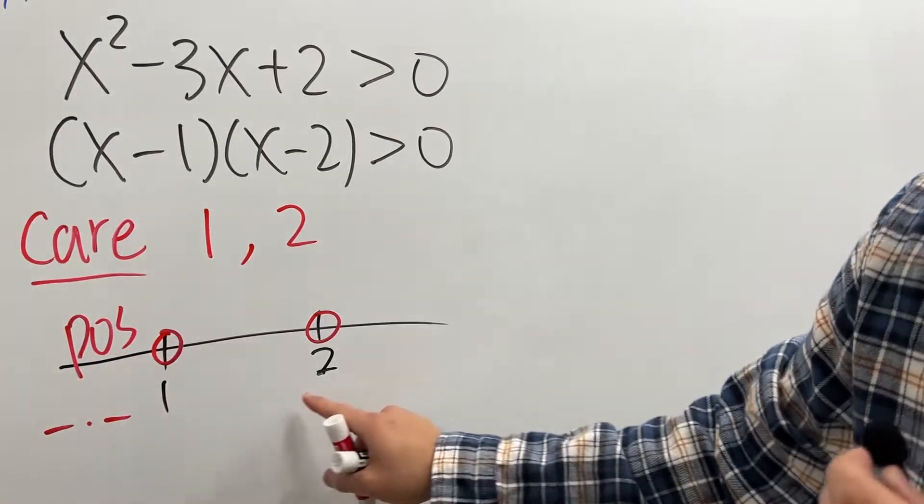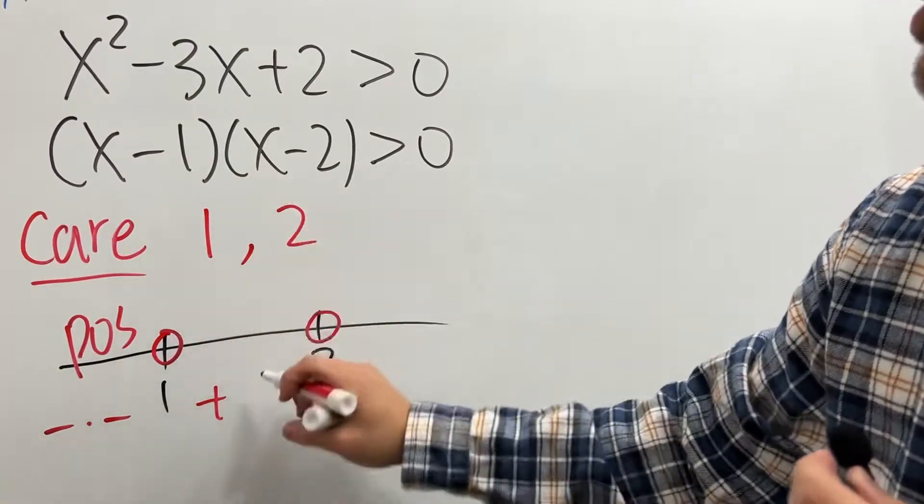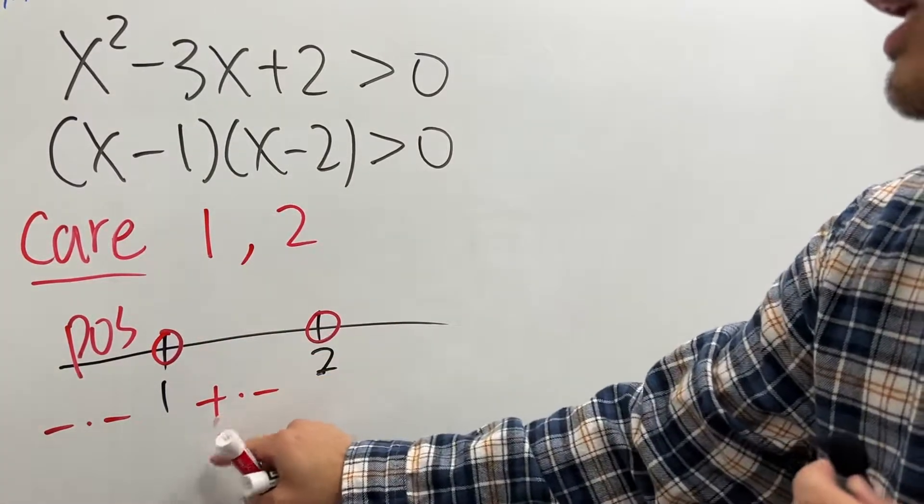Pick a number between 1 and 2, let's say 1.5. Put it here, we get positive. Put it here, we get negative. When you multiply, we get negative.